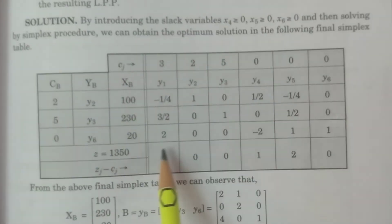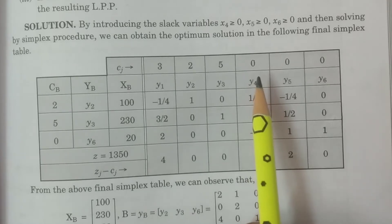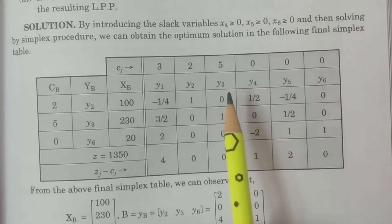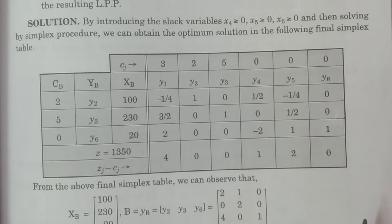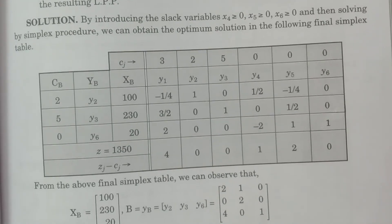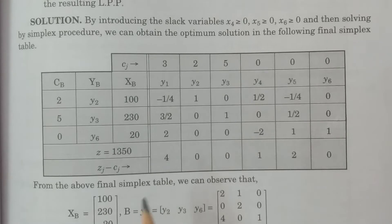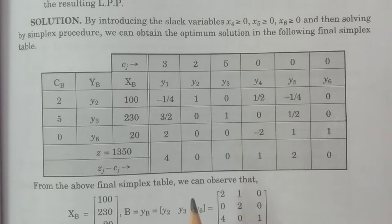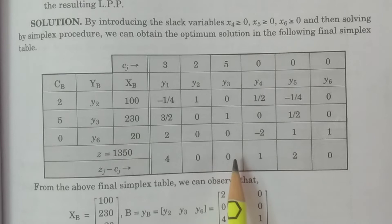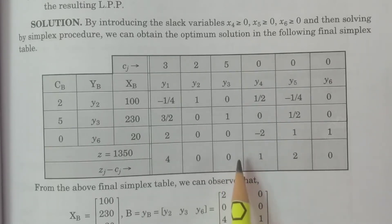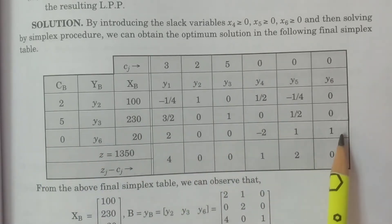By introducing slack variables and since all constraints are less than or equal to, we solve using the simplex procedure. This is the final optimum simplex table. You have to solve the given problem and obtain this final optimum simplex table.